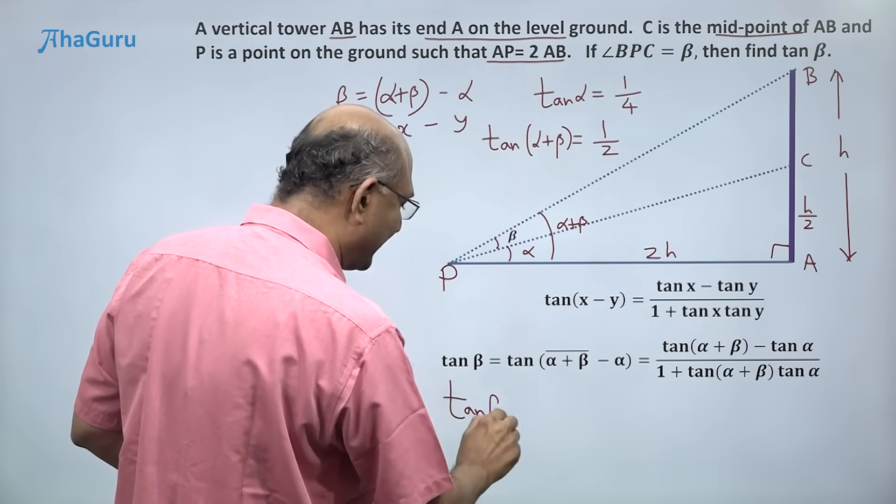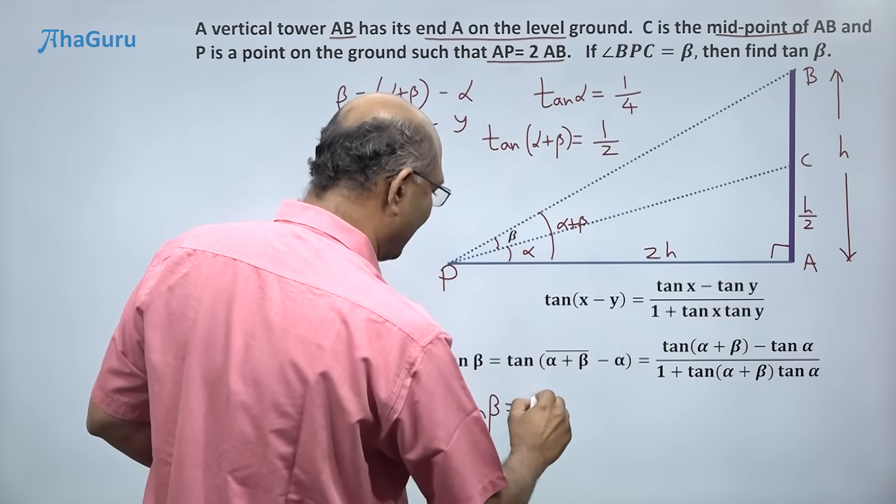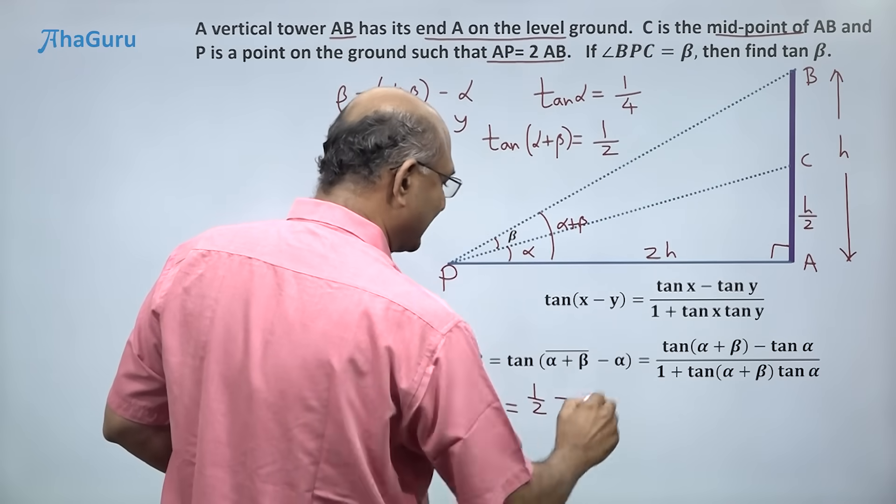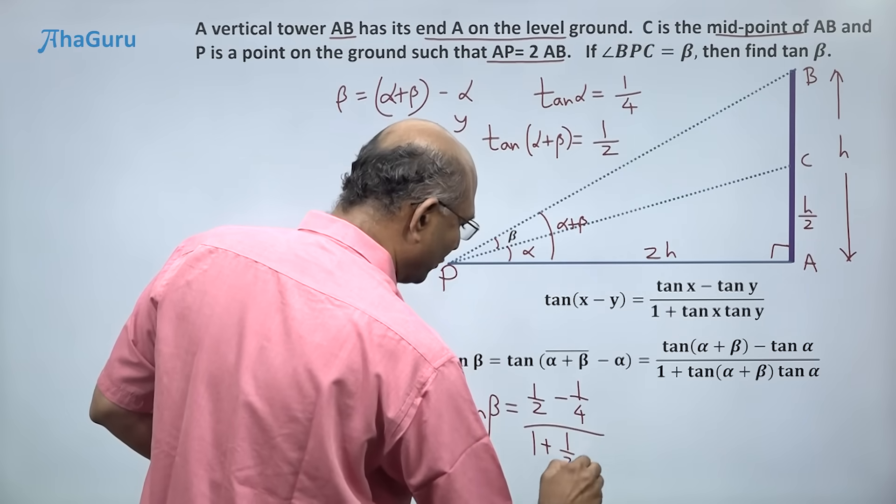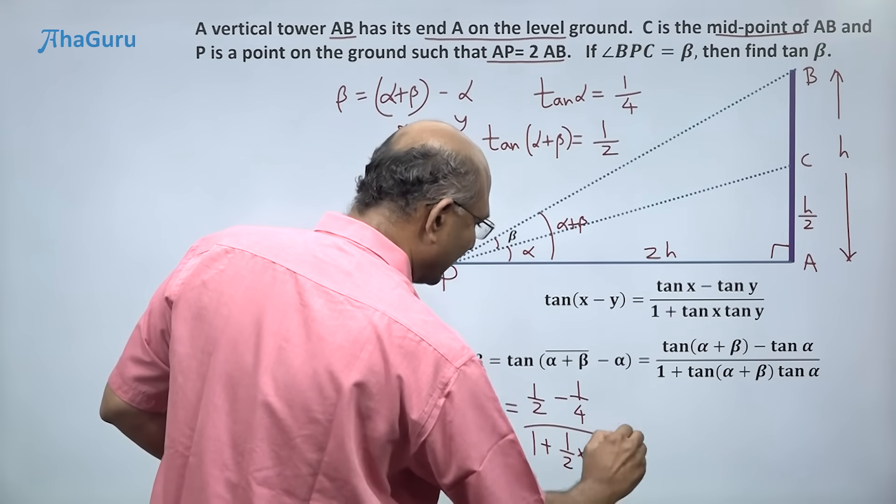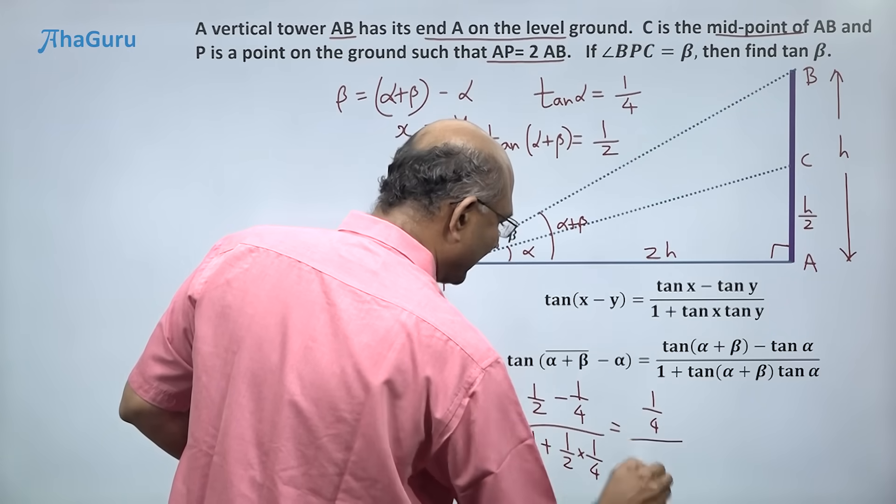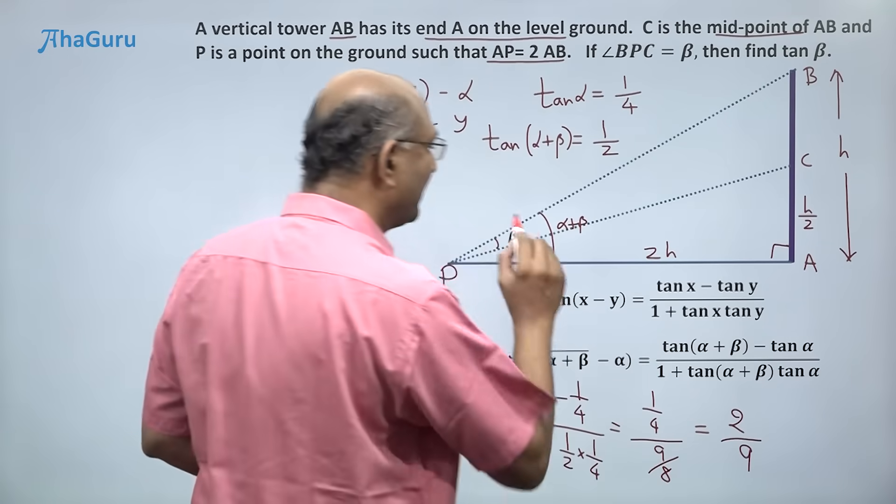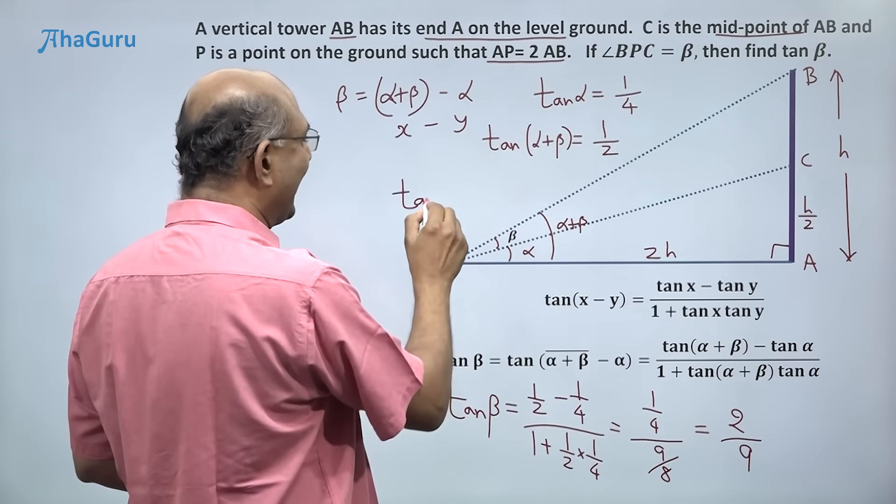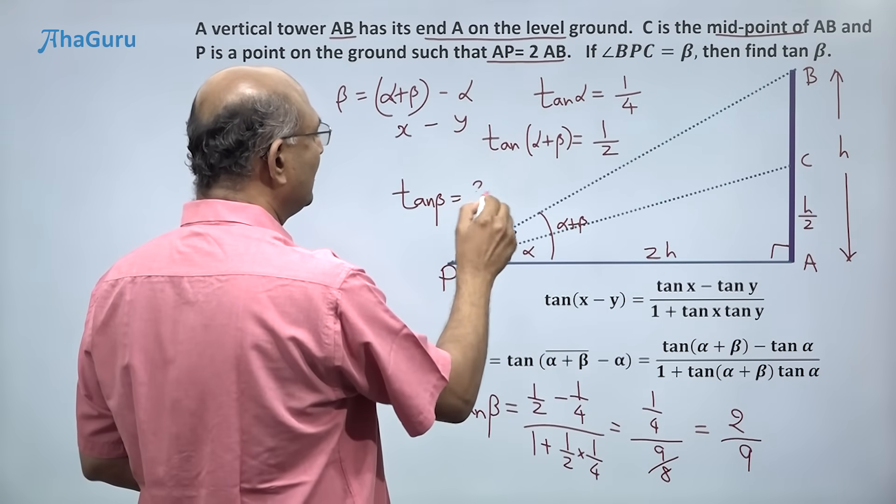So tan beta is tan of (alpha + beta), which is 1/2, minus tan alpha, 1/4, divided by 1 plus 1/2 times 1/4. So that is 1/4 divided by 9/8, so therefore 2/9. So we have now found out that tan beta is 2/9.